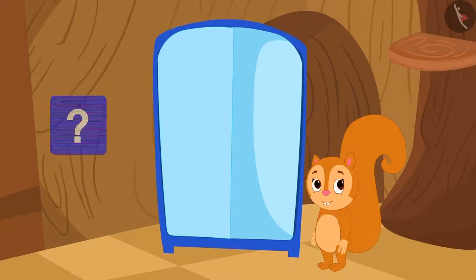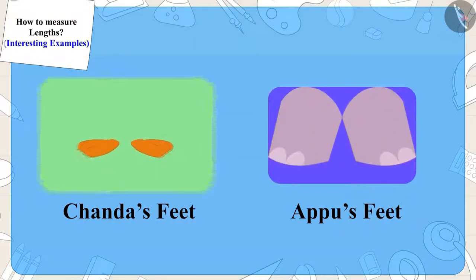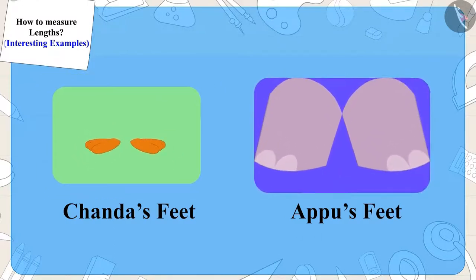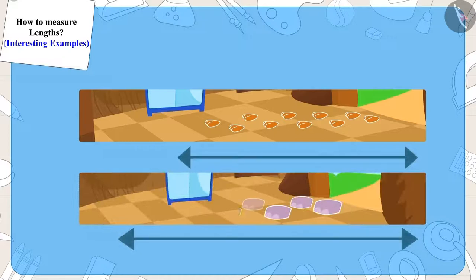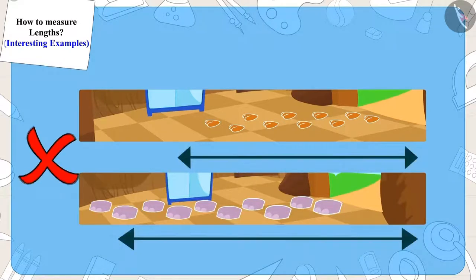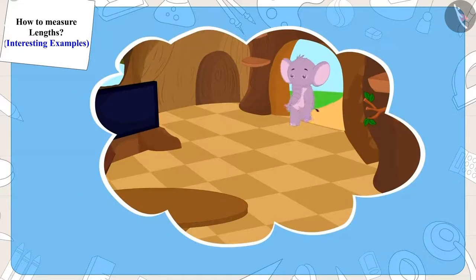Children, can you say why this happened? Actually, Chanda's feet are too small and Appu's feet are too big. This is the reason why the distance measured by Chanda's ten steps and Appu's ten steps are not the same.